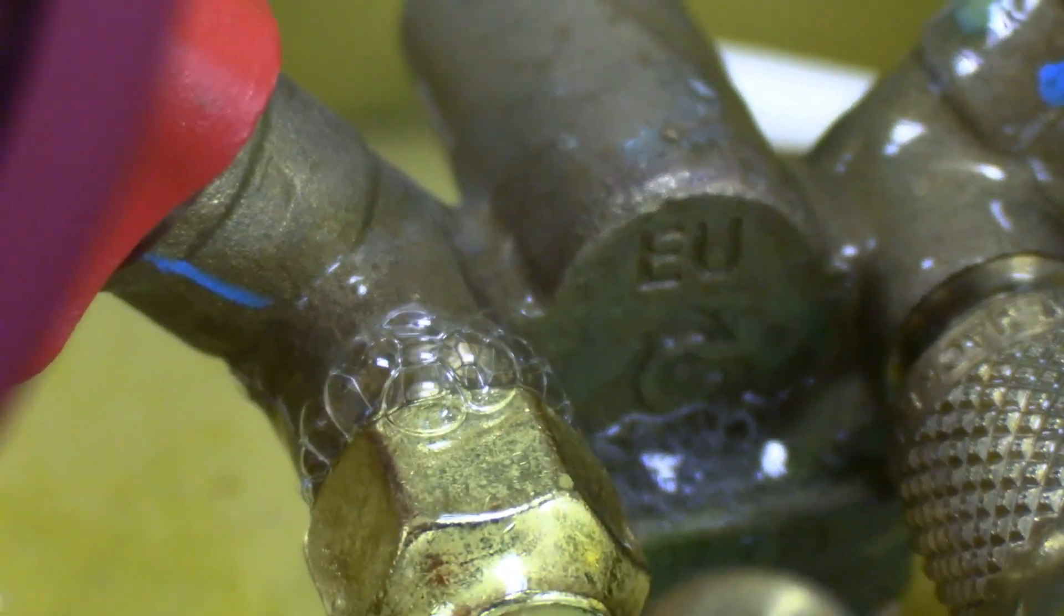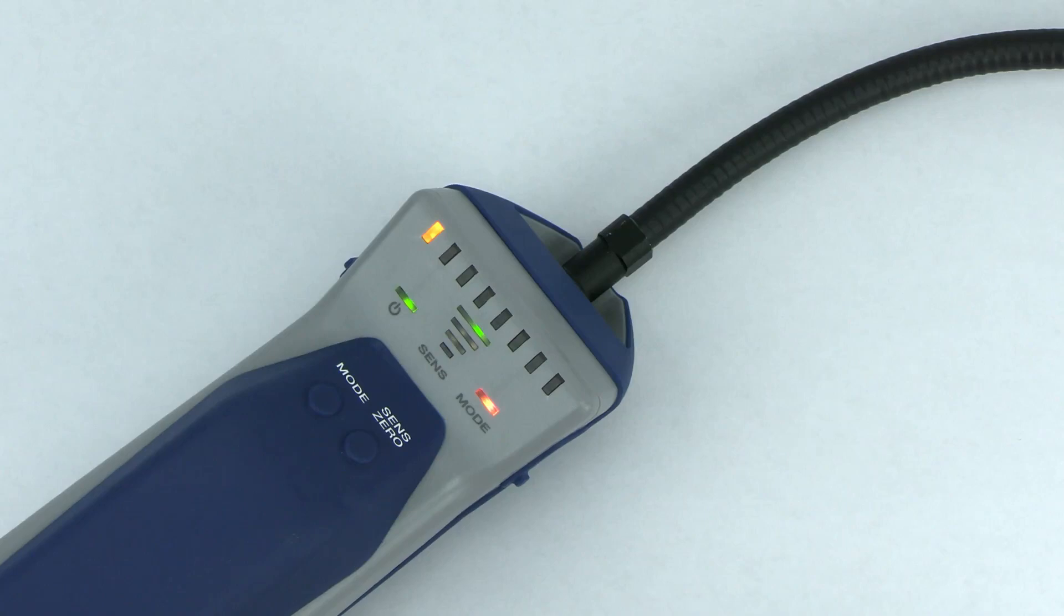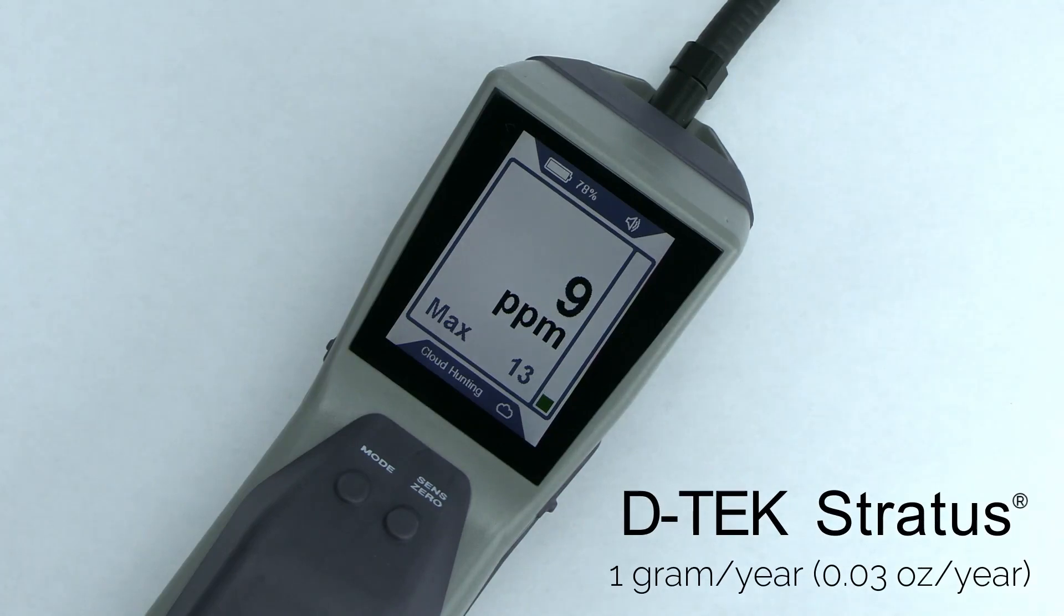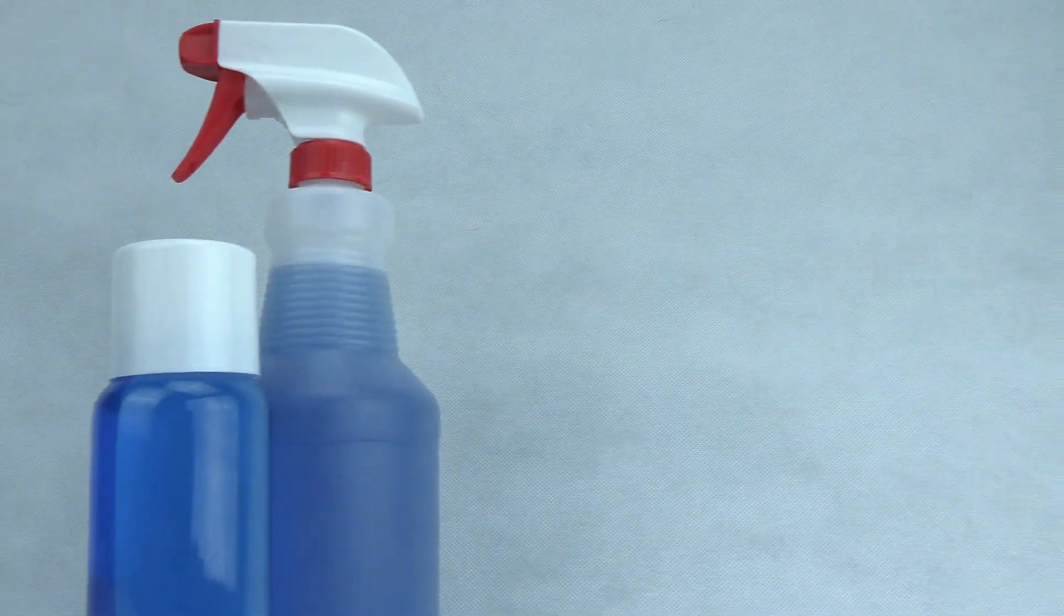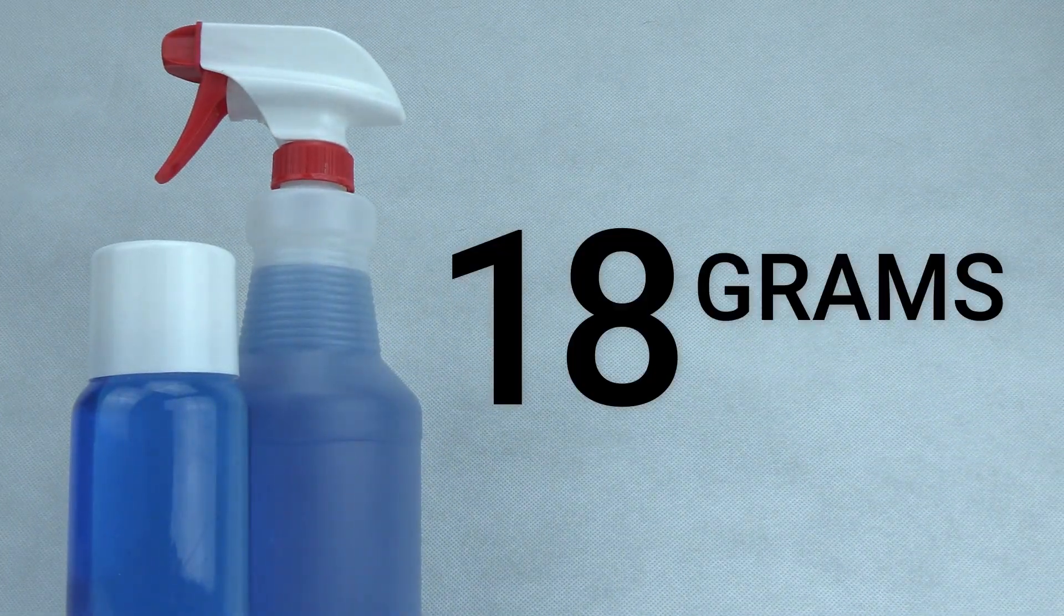Inficon's lineup of electronic leak detectors are engineered to repeatedly detect leaks as small as one gram per year. Soap bubbles are only sensitive down to about 18 grams per year, which is over 10 times less sensitive than some electronic detectors.